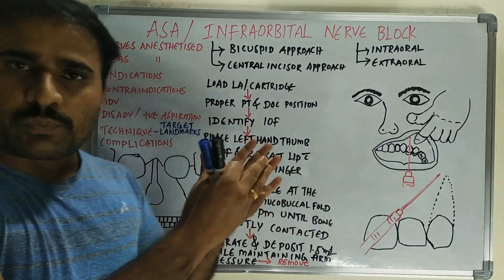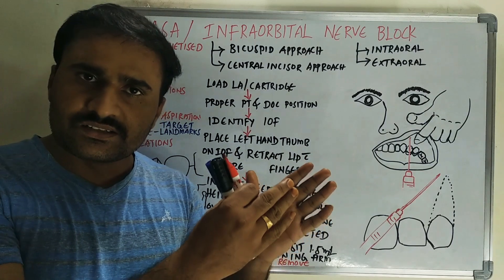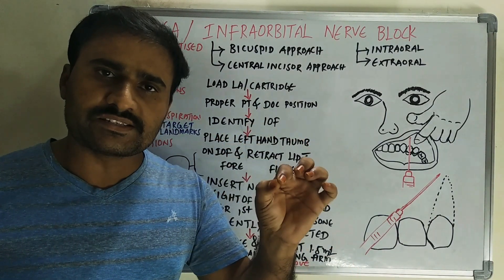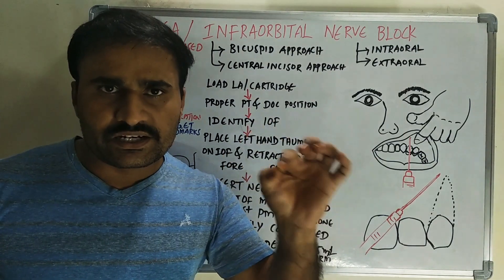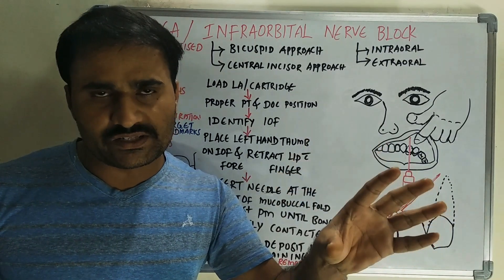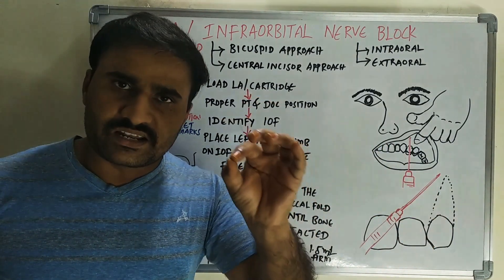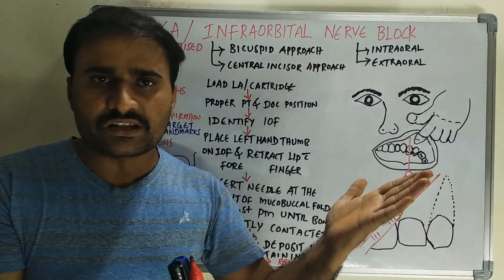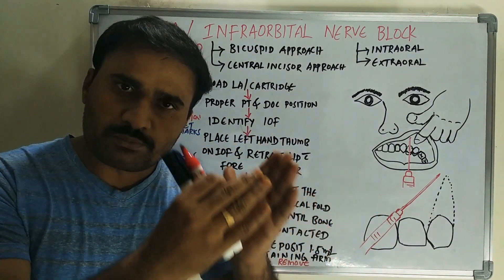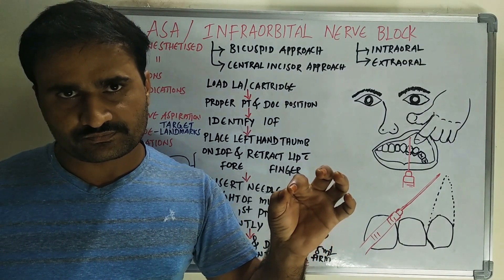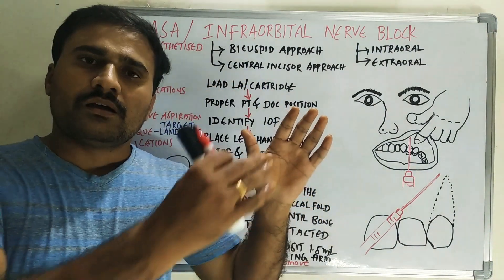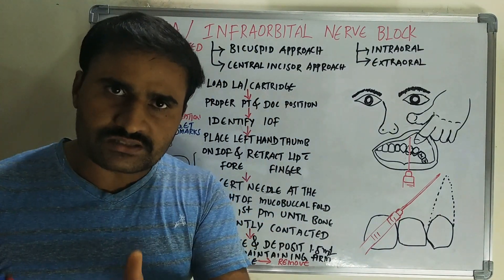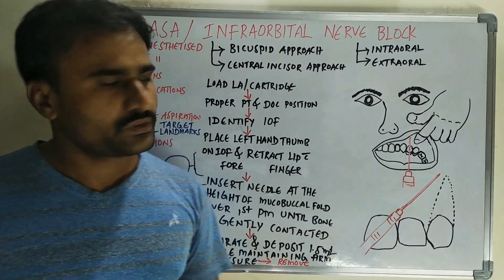ASA supplies the maxillary teeth from central incisor to the canine region. MSA is only present in 28% of cases. When present, it supplies the maxillary premolars and in some cases the mesiobuccal root of the maxillary first molar. In the remaining 72% of cases, the premolars and mesiobuccal root are also supplied by ASA. So pulpal anaesthesia covers from the maxillary central incisor to the canine, premolars, and sometimes the mesiobuccal root of the maxillary first molar.